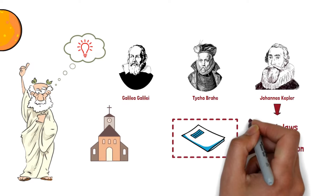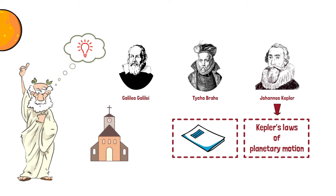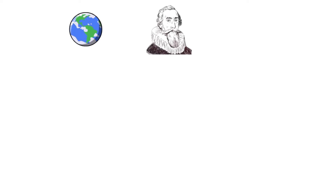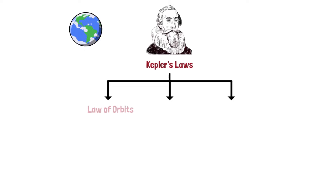In this tutorial, we will uncover the details of these laws. To describe the motion of the planets, Kepler arrived at three elegant laws of planetary motion. These are the law of orbits, the law of areas, and the law of time periods.